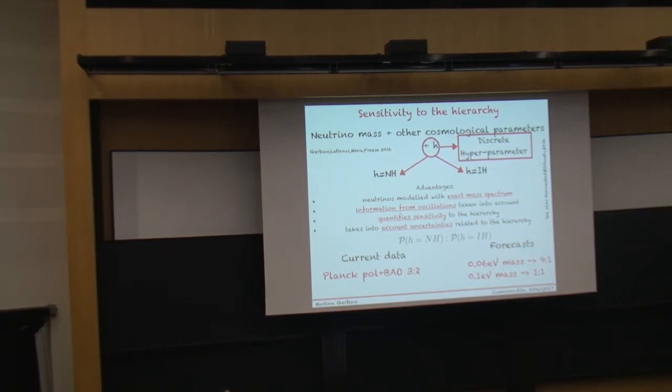This discrete parameter simply allows us to choose between the two different hierarchies, normal hierarchies, either normal hierarchies or inverted hierarchy. And what we do is simply to extract this discrete parameter at each step of our Monte Carlo and then model the spectrum of the neutrino masses accordingly to this choice. This is a very straightforward and useful method because if we, at the end of our sampling, simply marginalise over all the other cosmological parameters but this one, then we can get, then we can assess the sensitivity of cosmological observable to the hierarchy.